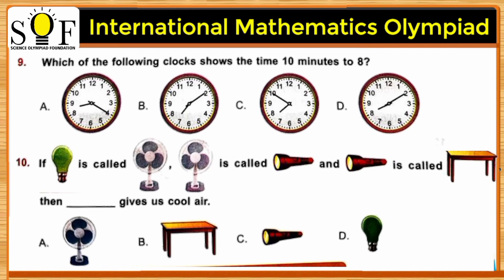If a light bulb is called a fan, and a fan is called a torch, and torch is called a table, then what gives us cool air? Children, out of these given options, fan gives us cool air. But according to the question, fan is called a torch, so the correct answer is option C, a torch.